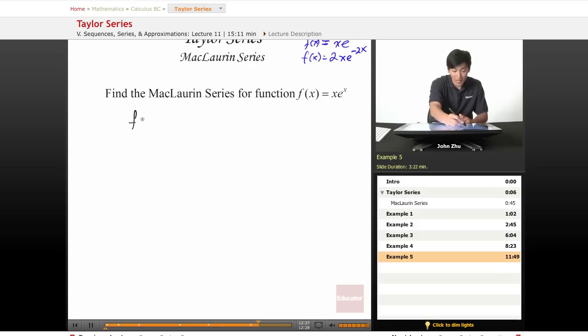So let's go ahead and try this out. f of x is equal to x e to the x. f prime of x is equal to - we're going to use a product rule.